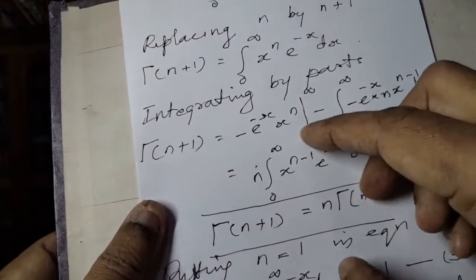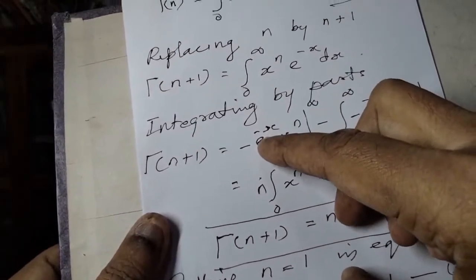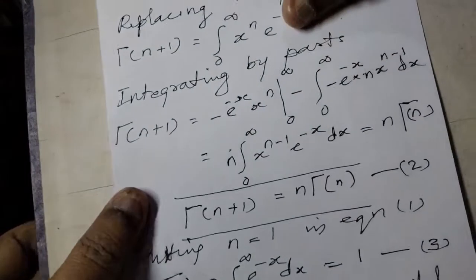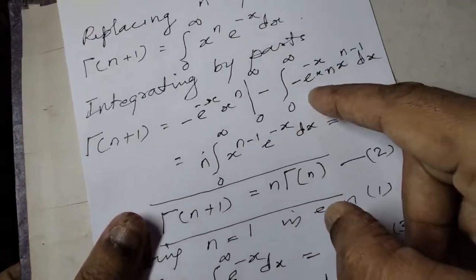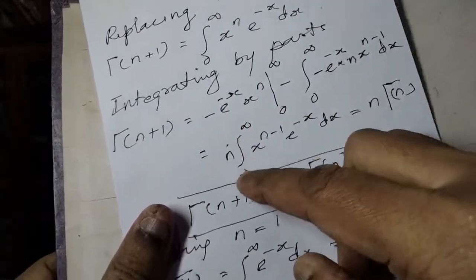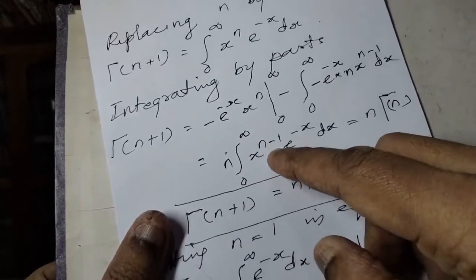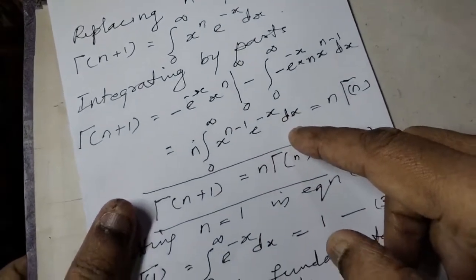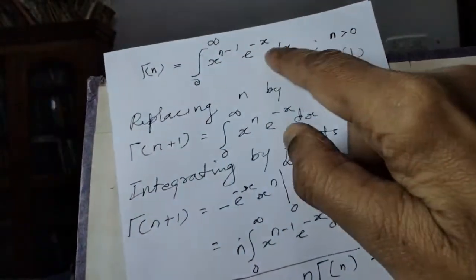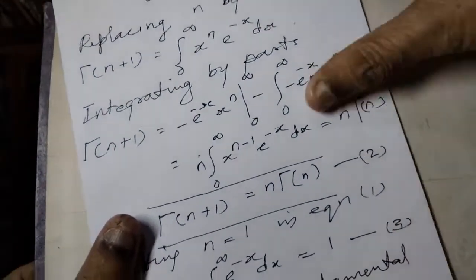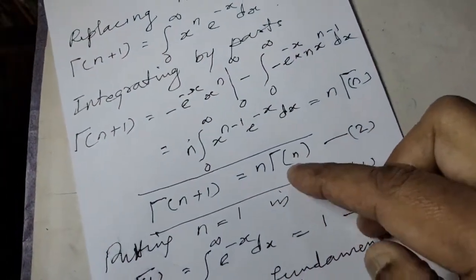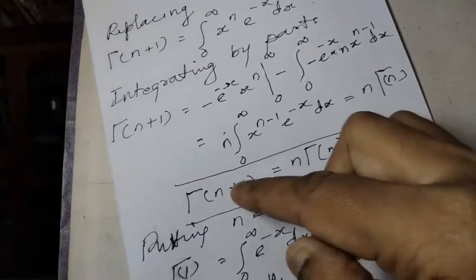Evaluating the upper limit gives e raised to minus x equals 0, and the lower limit contributes 0 to infinity of x raised to n minus 1 times e raised to minus x dx. This simplifies to n times gamma of n. So gamma of n plus 1 equals n times gamma of n. This is the recursion formula.